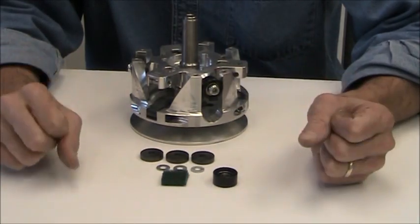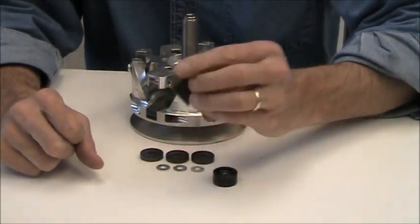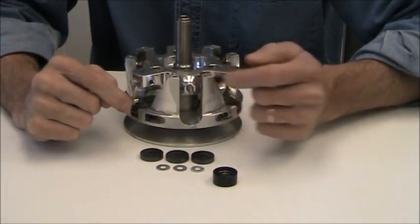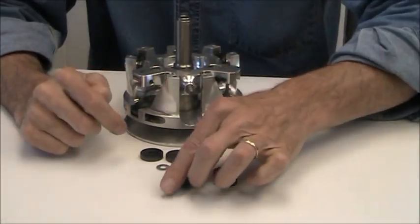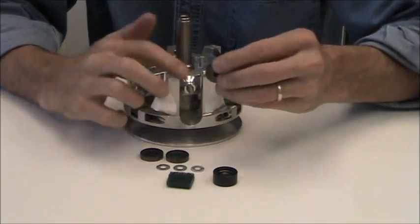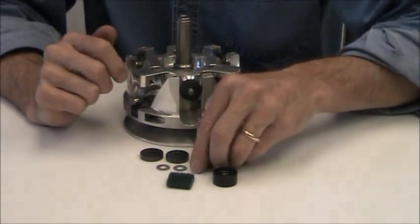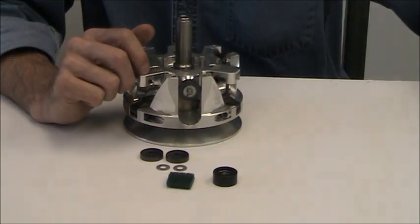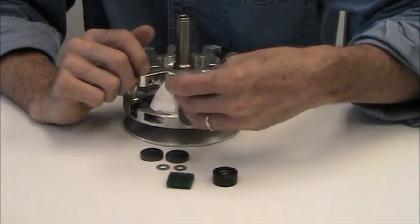This kit is really simple to put in. We send the Scotch-Brite, and I'll show you here on a clutch. When you pull the bearing off, there's a small surface here, and what we do is we use the Scotch-Brite to clean that area up. You slide your roller on, you'll put your precision washer on, and then you'll put your lock nut on.